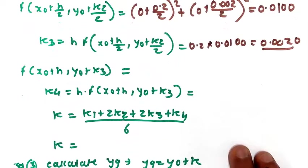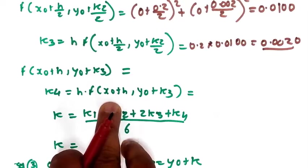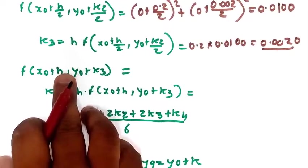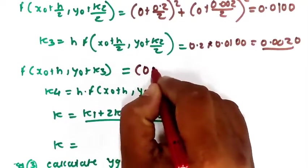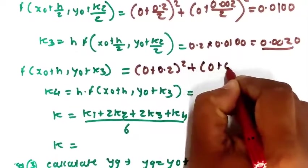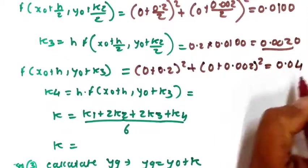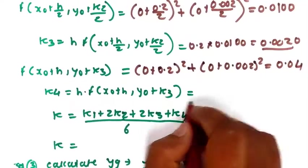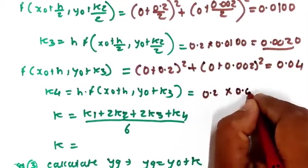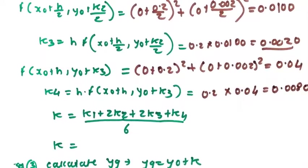Next, find k4. The formula uses x0 + h and y0 + k3. Substituting the values: (0 + 0.2)² + (0 + 0.002)² ≈ 0.04. Multiplying by h: k4 = 0.2 × 0.04 = 0.0080.